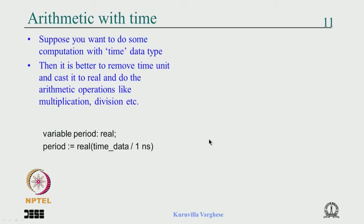When doing arithmetic with time — since time is a physical unit using integers — to multiply a period, divide the time value by 1 nanosecond to get a number without units, cast it to real to get the period, then convert back to time at the end. This shows how to convert a time value to a real number for computation.